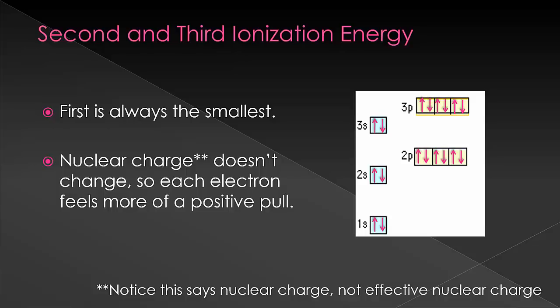Once you remove one, now you have more protons than you do electrons. And so it's going to be pulling in those electrons tighter. So when you try to remove the second one, it's going to be higher. And then when you try to remove the third, it'll be higher even than the second. And each one will get larger.